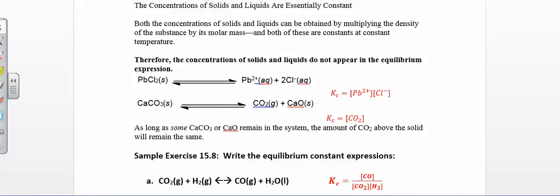When you write the equilibrium constant expression, you want to keep the concentrations of solids and liquids out of the expression. The idea is that the concentration of solids and liquids are going to stay constant throughout the course of the reaction. Remember how you find concentration — you're looking at the moles of the compound per liters of solution.